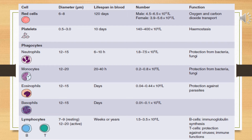RBCs have a diameter range from 6 to 8 micrometers and a lifespan of 120 days. The normal RBC count in males is usually 4.5 to 6.5 × 10¹² per liter. The normal function of RBCs involves hemoglobin — the oxygen-carrying protein — present inside the RBCs. Oxygen binds with hemoglobin and RBCs move in the blood as oxygen carriers, transporting oxygen and carbon dioxide.